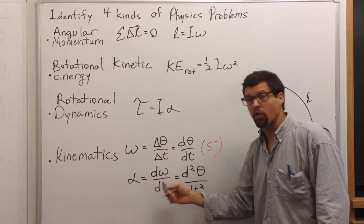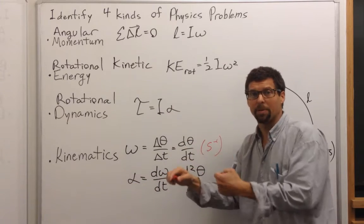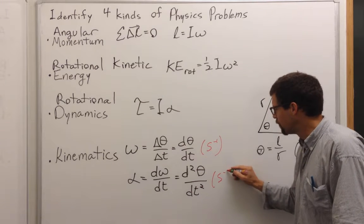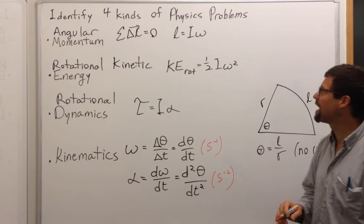Alpha, the rate of change of omega, how fast it's speeding up or slowing down, is a second time derivative, is seconds to the negative 2, seconds squared in the denominator.